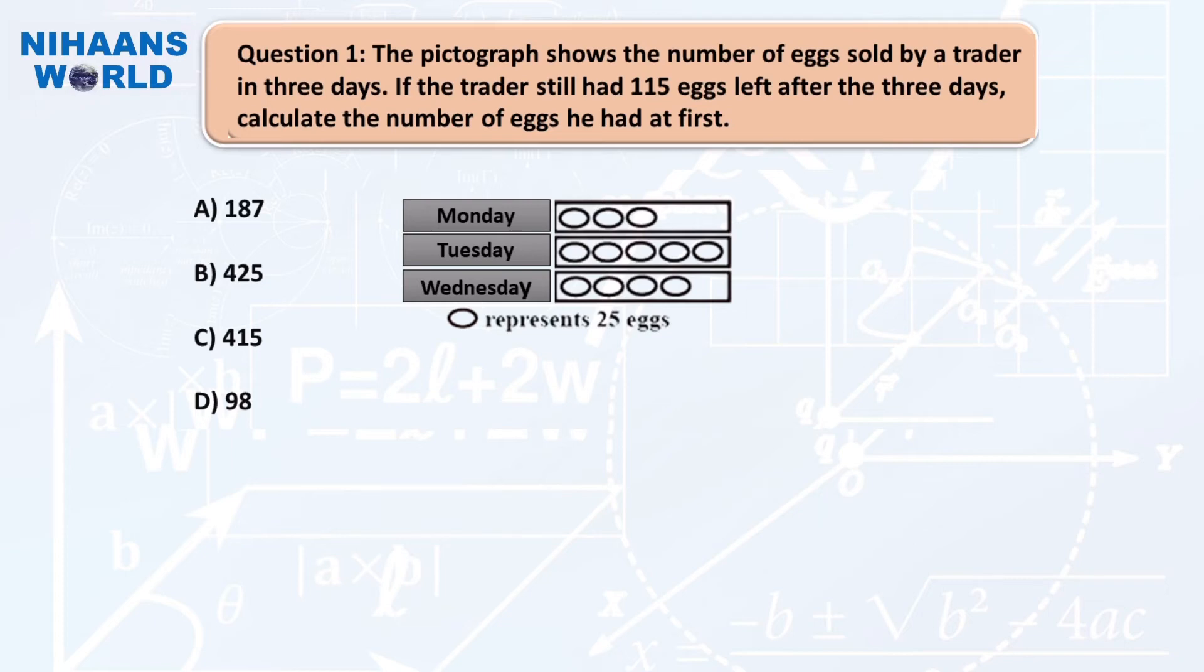One egg symbol represents 25 eggs. Monday: 3 multiplied by 25 eggs equals 75 eggs. Tuesday: 5 multiplied by 25 eggs equals 125 eggs. Wednesday: 4 multiplied by 25 eggs equals 100 eggs.